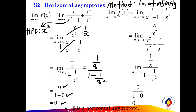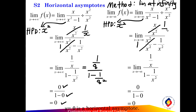Second, find the limit of f(x) as x approaches negative infinity. The highest degree of the denominator is x squared, so divide both numerator and denominator by x squared. Here 1 over x approaches 0, and the denominator gives 1 minus 0. The limit of f(x) as x approaches negative infinity equals 0. Conclusion: y equals 0 is the horizontal asymptote of the rational function.